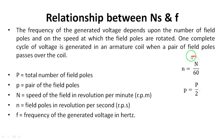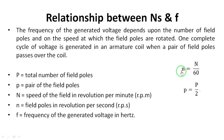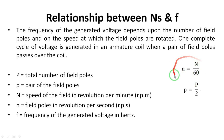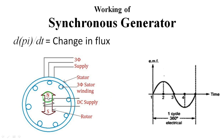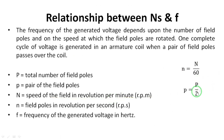There are two key relations. First, small n (revolutions per second) equals capital N (revolutions per minute) divided by 60, since one minute equals 60 seconds. Second, small p (pair of poles) equals capital P (number of poles) divided by 2. For example, in a diagram with one north pole and one south pole — two poles total — dividing by two gives one pair, so small p equals one.